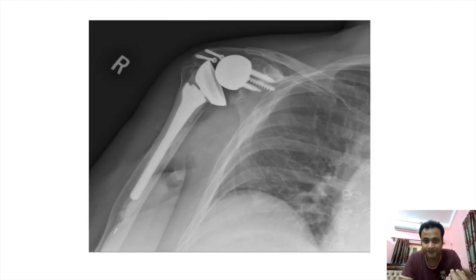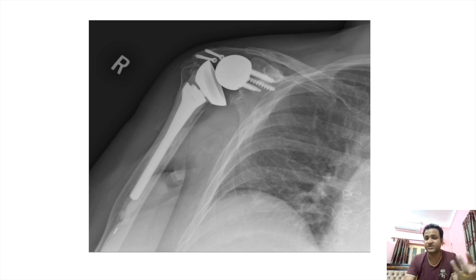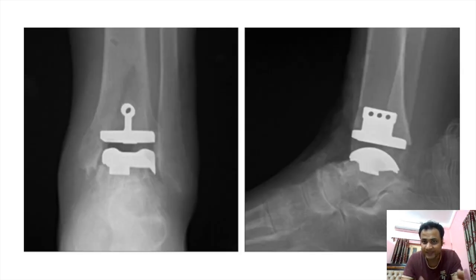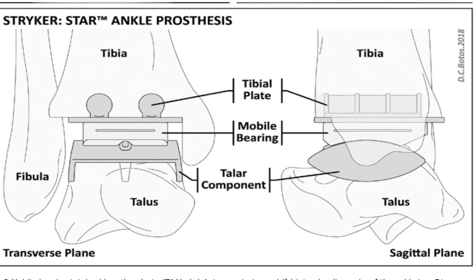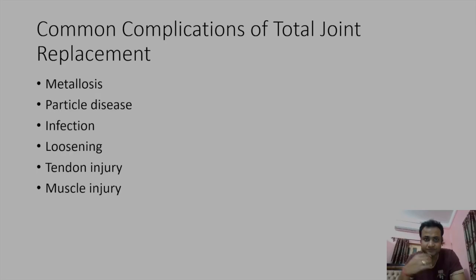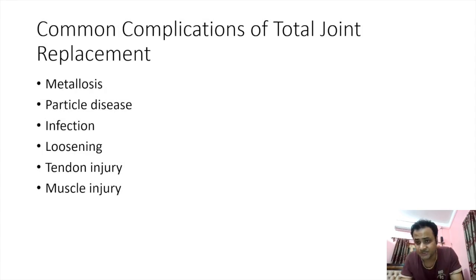This is a shoulder prosthesis where a shaft goes into the humerus with articulation at the glenoid cavity. For the ankle prosthesis, the talar dome and lower end of the tibia are covered with articular caps. The ankle prosthesis components include a tibial plate, a talar component, and mobile bearings present between the two components. These bearings help in the smooth functioning and movement of the ankle joint.